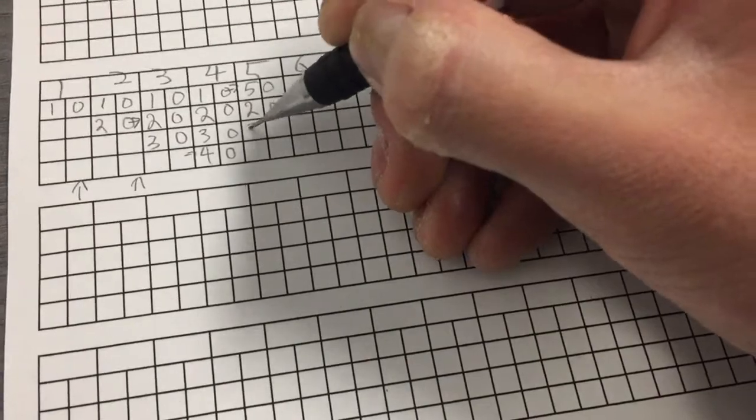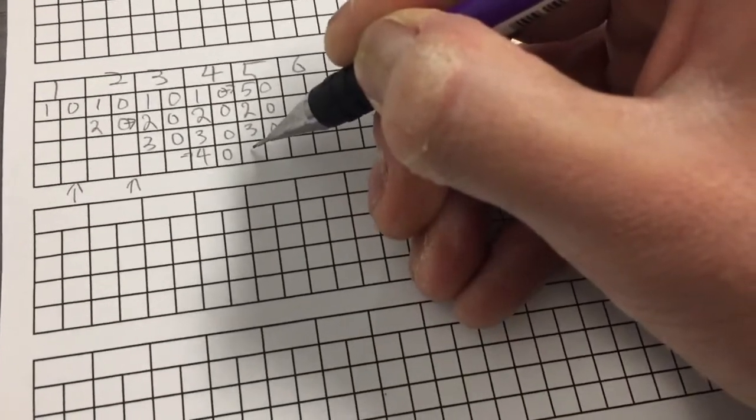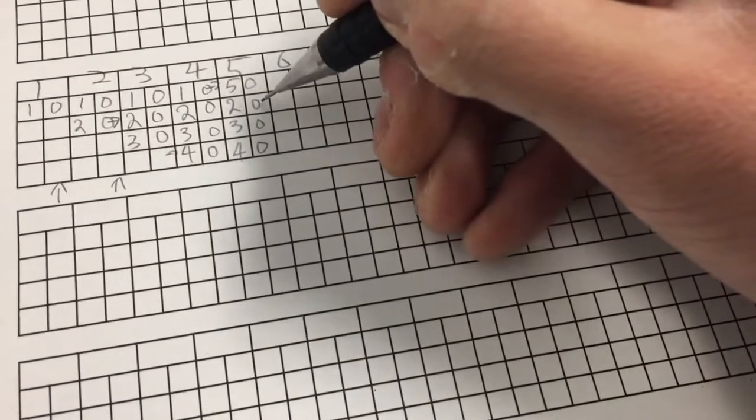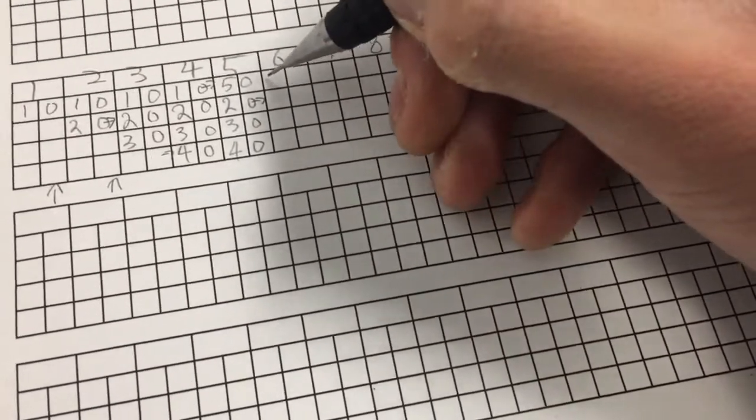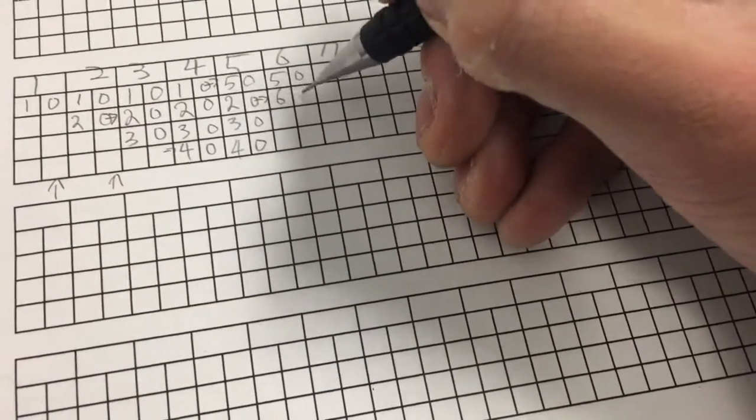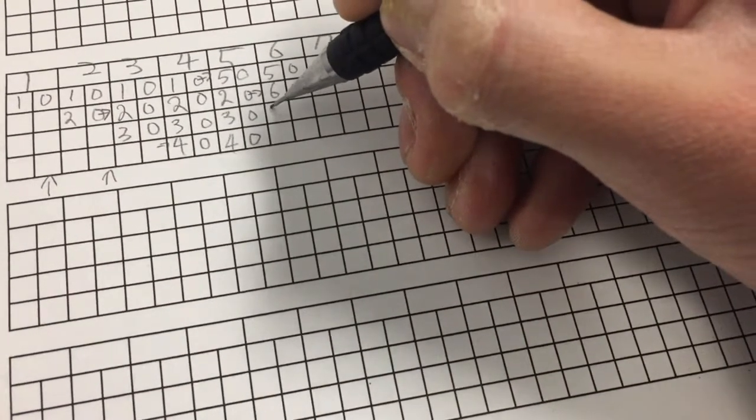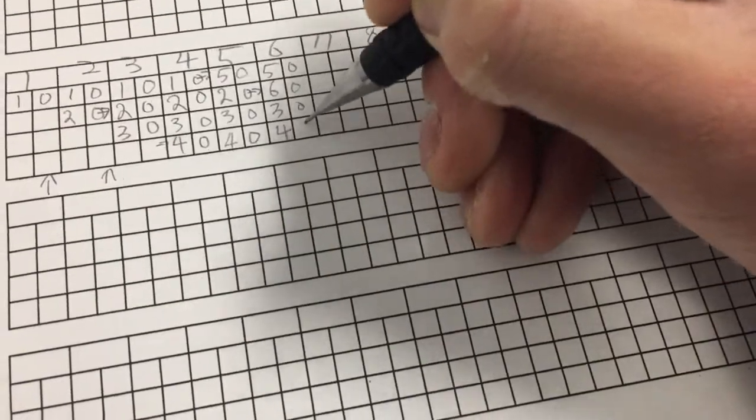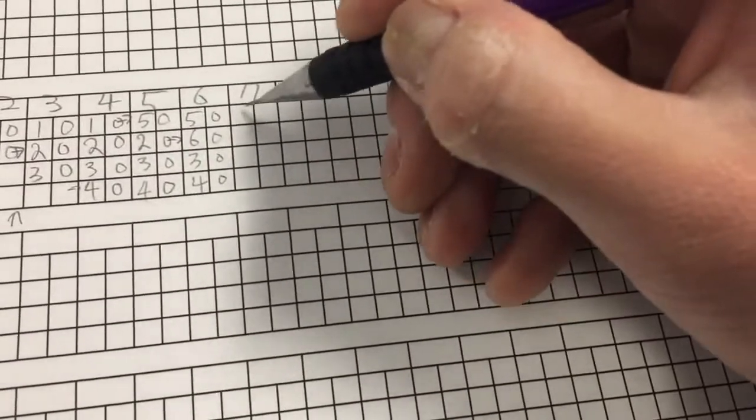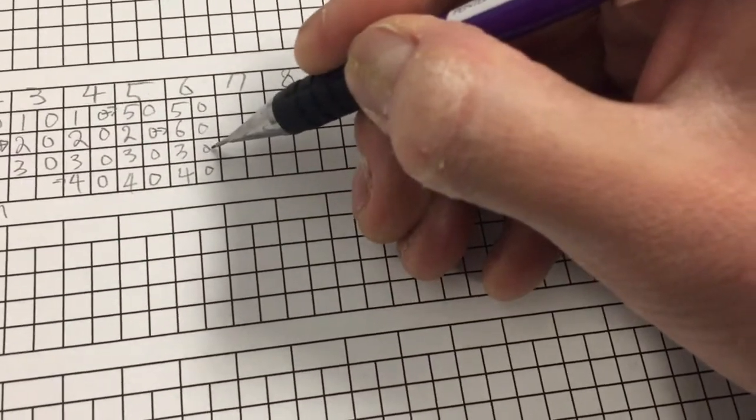2, 0, 3, 0, 4, 0. And then the pointer moves to here. 5, 0, 6, 0, 3, 0, 4, 0. Since we don't have any page hits, so we all have zeros.